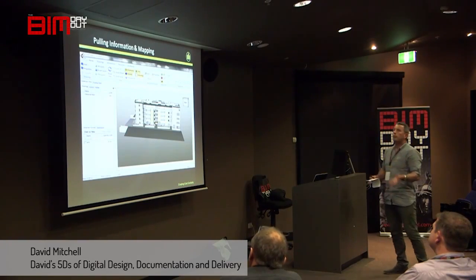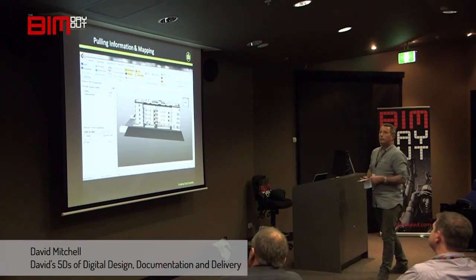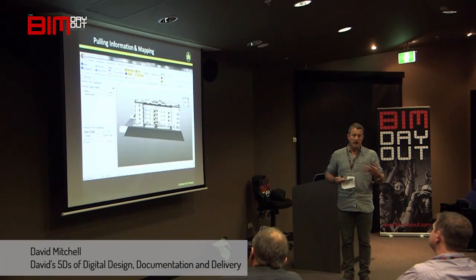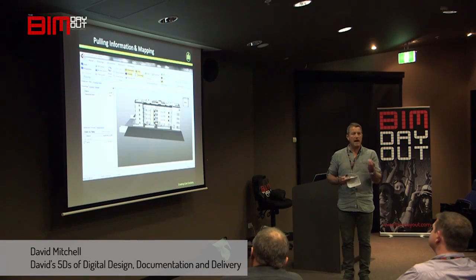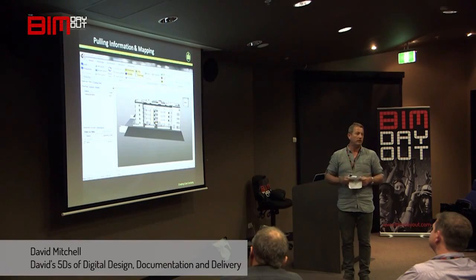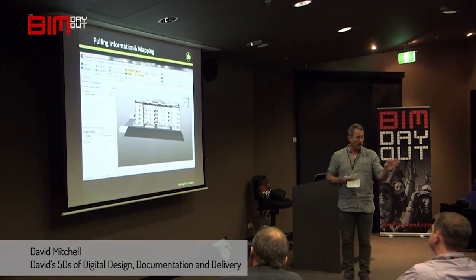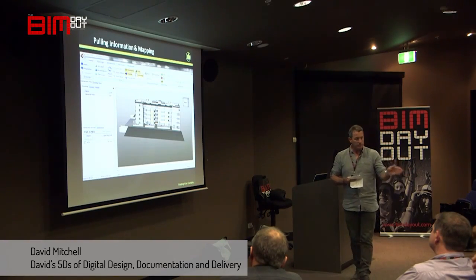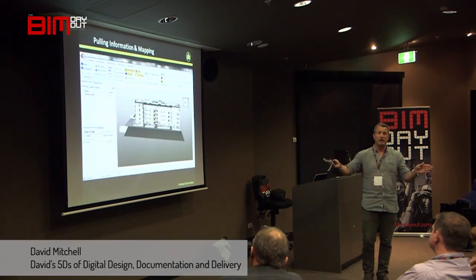The first one is being able to pull information from a model. We use a piece of software called Costex. But there's a more important thing to it and it's called a map. The map is the thing that tells everybody what a quantity is — it maps from the families and objects within the model to an estimate. And that map has a value to anybody.